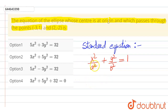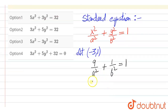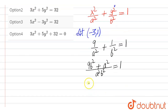Now, since this ellipse passes through these points, at (-3, 1), putting x equal to -3, x² becomes 9. So the equation becomes: 9 over a² plus 1 over b² equals 1. From here we get 9b² + a² = a²b². This is equation number 1.